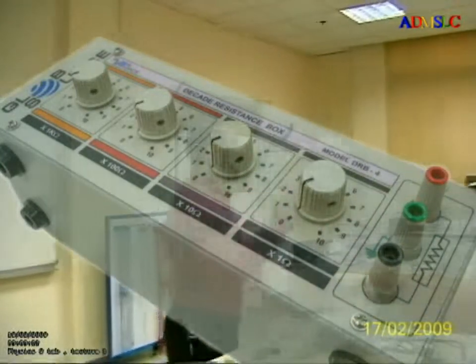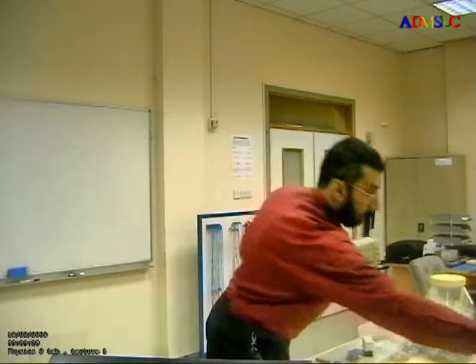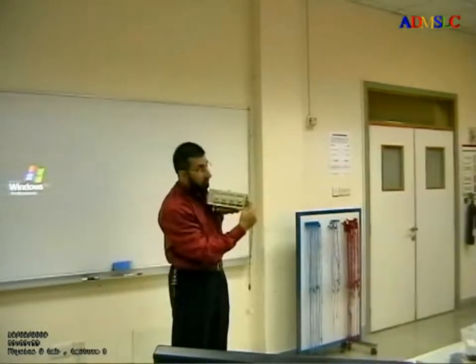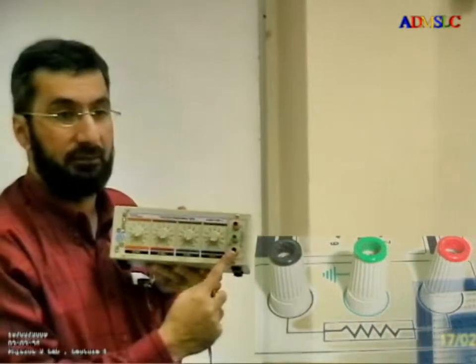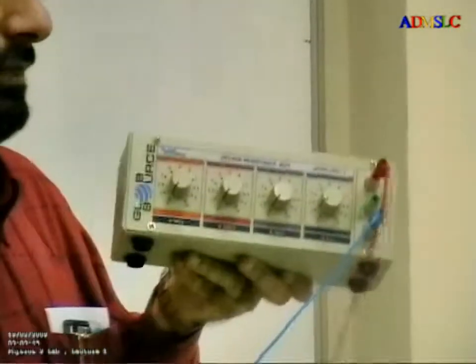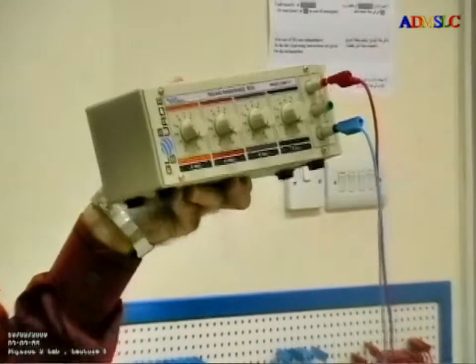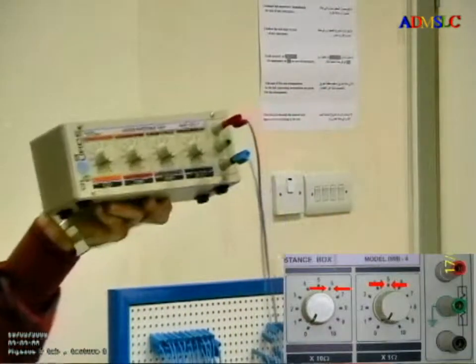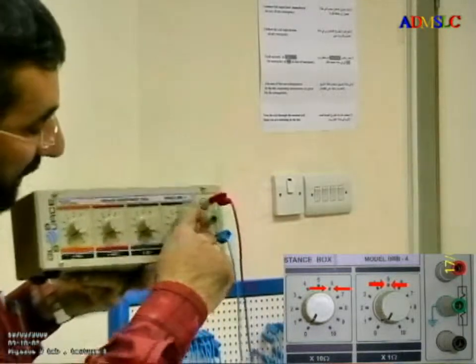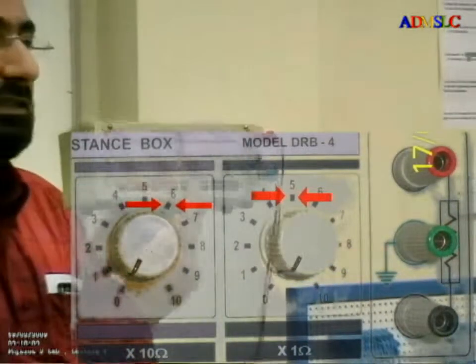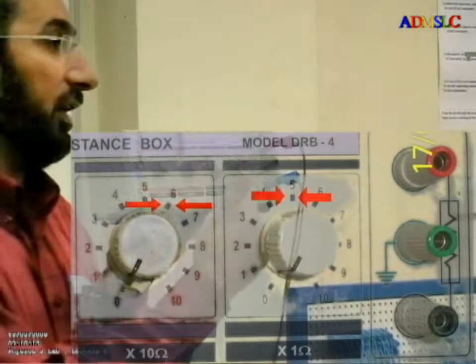This is also a resistor box. The resistance is between the red and black terminals. I set all dials to zero first. Let's say I want 65 Ohm — that is 60 plus 5, multiplied by one Ohm. I set this to five and this to six, giving me 65 Ohm.